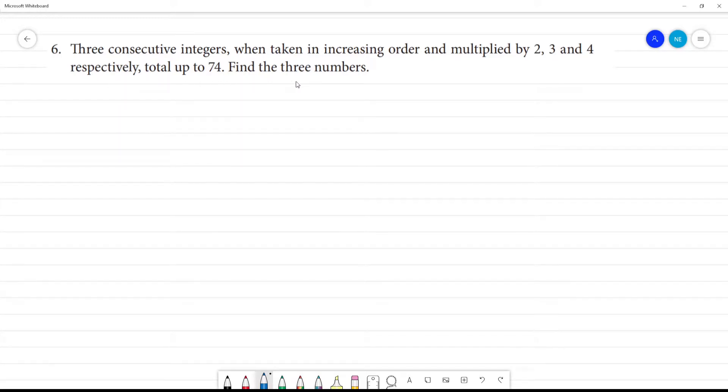Three consecutive integers, when taken in increasing order and multiplied by 2, 3, and 4 respectively, total up to 74. Find the three numbers.